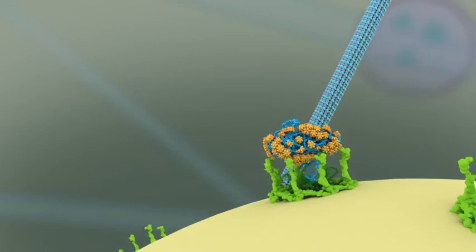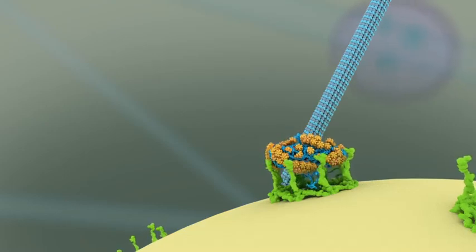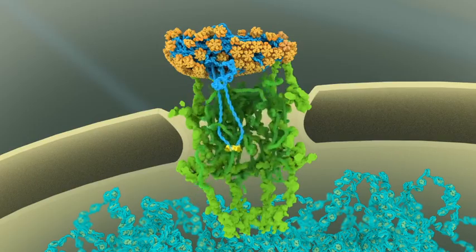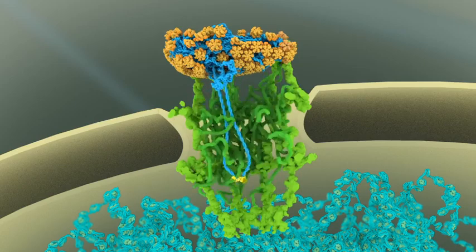The viral genome has now reached the nucleus. A segment of the viral DNA, bound by the viral protein integrase, shown in yellow, starts to make its way across the nuclear pore.